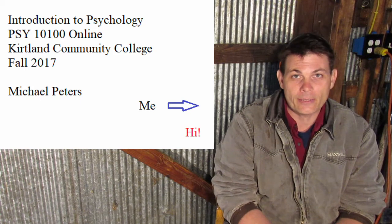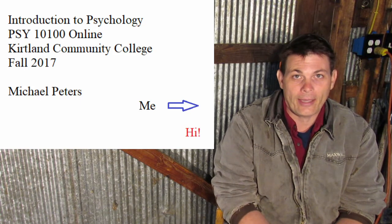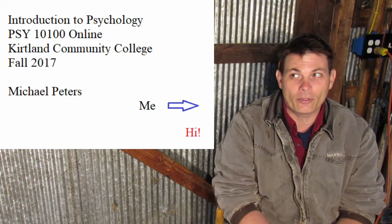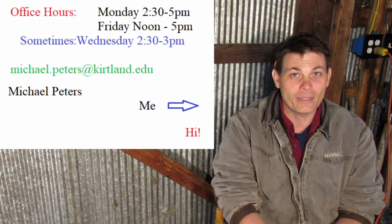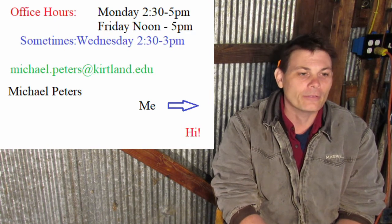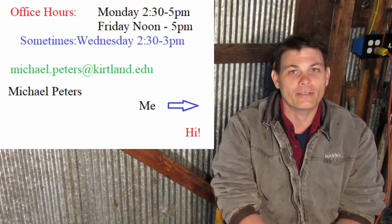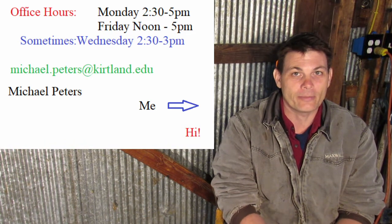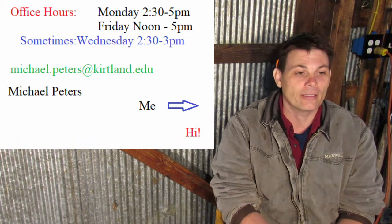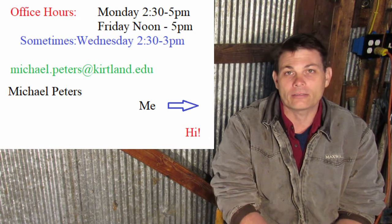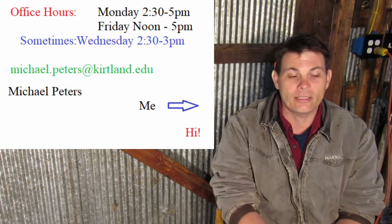This is for going over the syllabus and getting you oriented to the class. My office hours are going to be Mondays from 2:30 to 5, and Fridays from noon to 5. Mostly I'll be answering emails and grading papers and stuff like that. Email is michaelpeters@kirtland.edu — it's all on the syllabus.